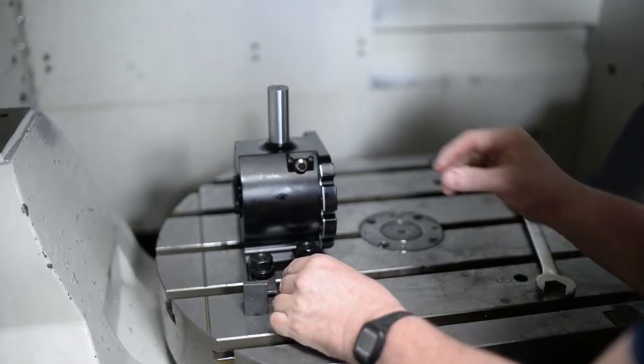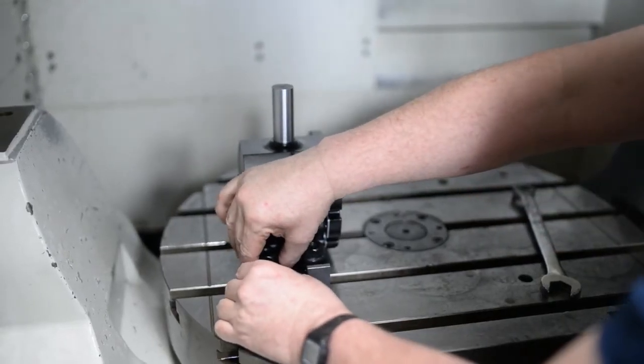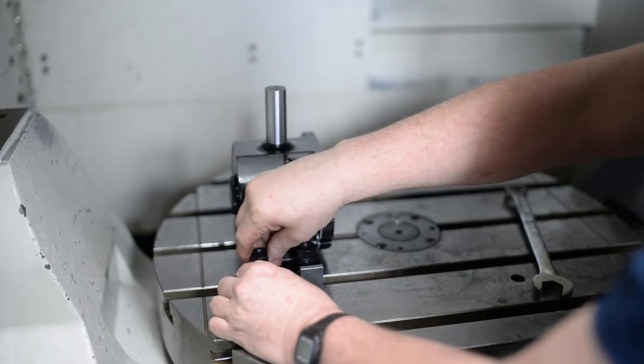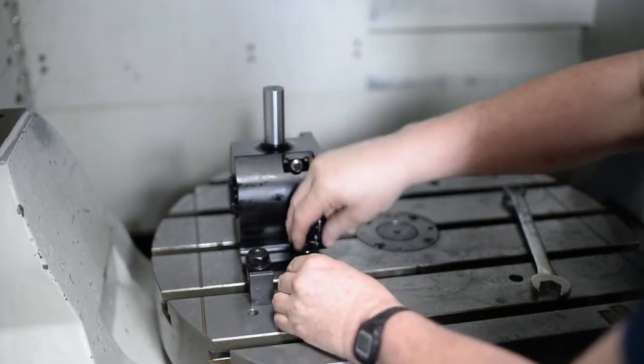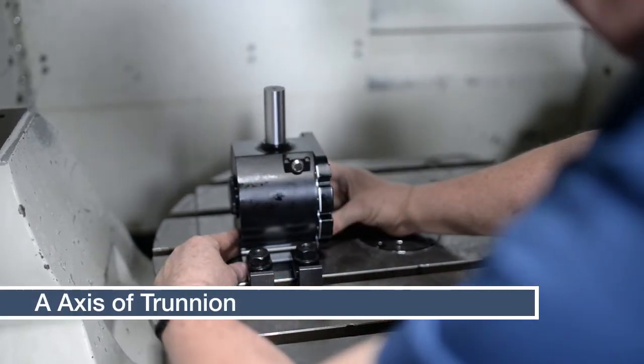For more configurations, let's check out how to mount the swivel check on a Mazak trunnion. For the A axis of a trunnion, mount the swivel check on the bed, but don't tighten it just yet.